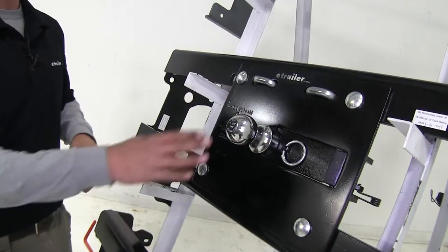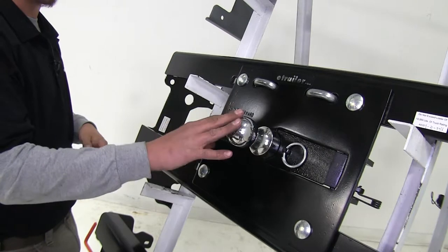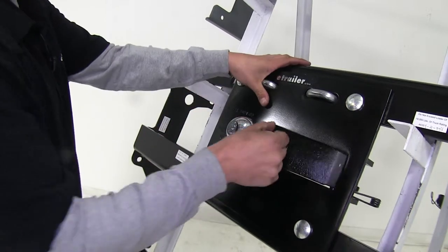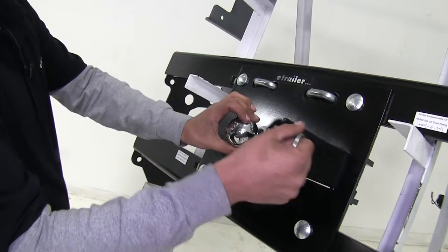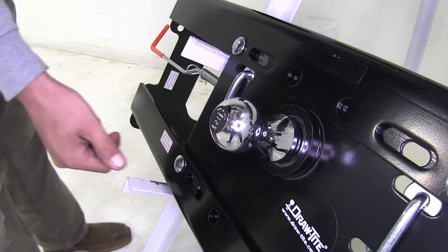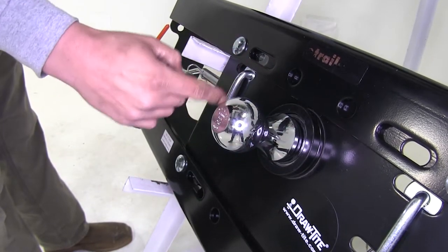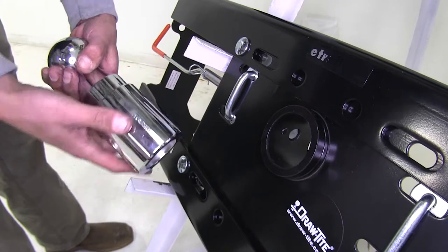Now our fold down here also has a two and five sixteenths ball but this one is going to have a chrome finish on it as well as it's permanently attached and we're not going to be able to remove it, but we still can stow it away. Finally here our Hide-a-Goose, it does have a nice chrome finish on the ball as well but as you can see it has a round shank.